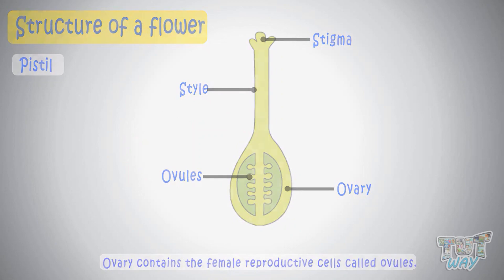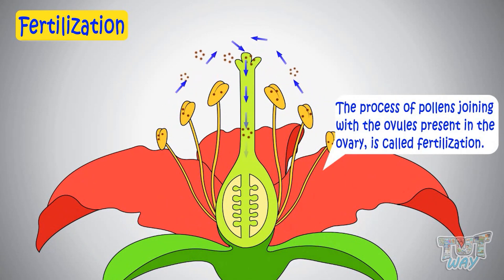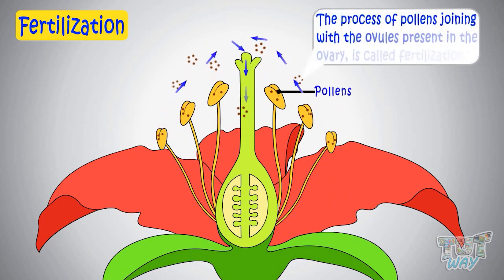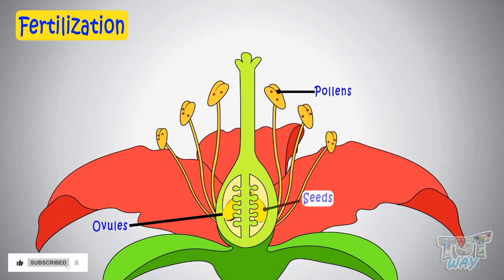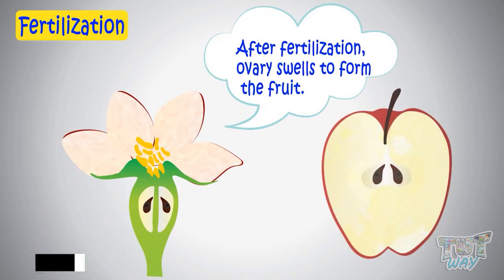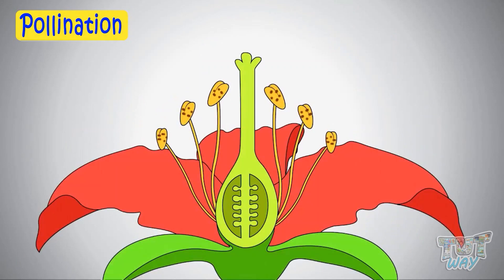When pollens from the anther of the stamen join with the ovules present in the ovary, it is called fertilization. Fertilization forms the seeds inside the ovary, and after fertilization the ovary changes into a fruit. That's why seeds are found inside the fruit.